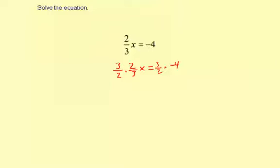So this 3 times 2 is 6. 2 times 3 is 6. We have 6 over 6x equals 3 times negative 4. We're going to make this over 1. So it'll be 3 times negative 4, which is negative 12, over 2 times 1, which is 2.